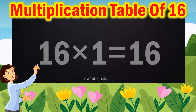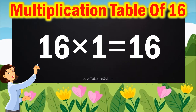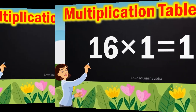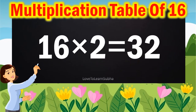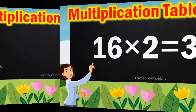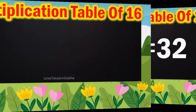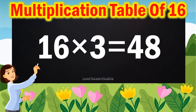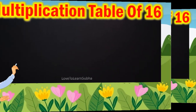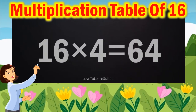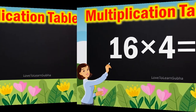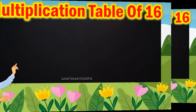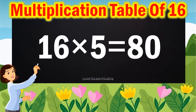16 ones are 16, 16 twos are 32, 16 threes are 48, 16 fours are 64, 16 fives are 80,